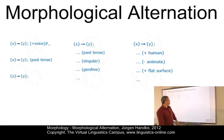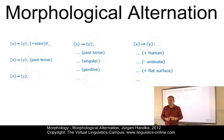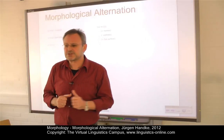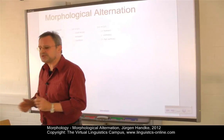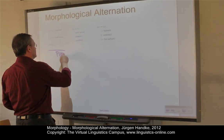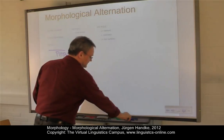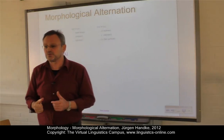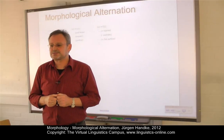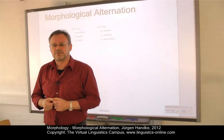Let's summarize. Several conditions can be postulated that allow us to determine the choice of allomorphs and to set up morphological rules. The discovery of such rules, especially phonological rules — phonological conditioning — is one of the major goals in the morphological analysis of the languages of the world.